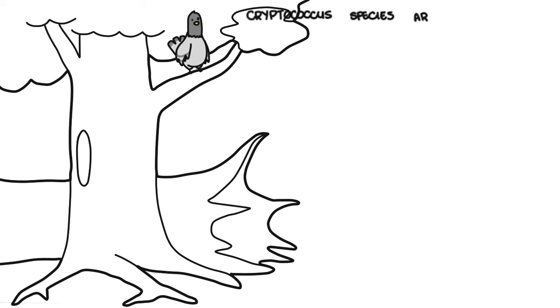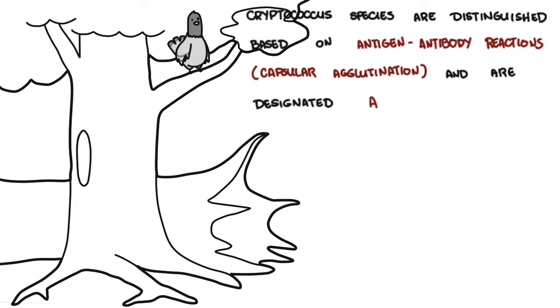Cryptococcus species are distinguished based on antigen antibody reaction, termed capsular agglutination, and are designated A, B, C, or D serotypes.